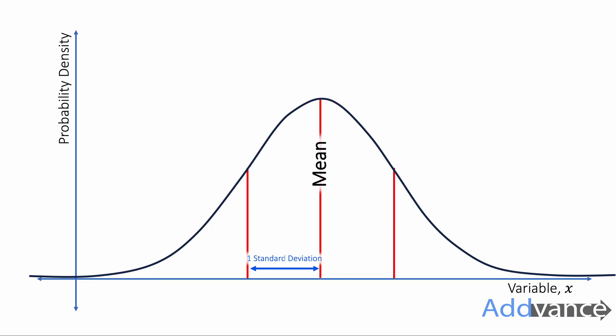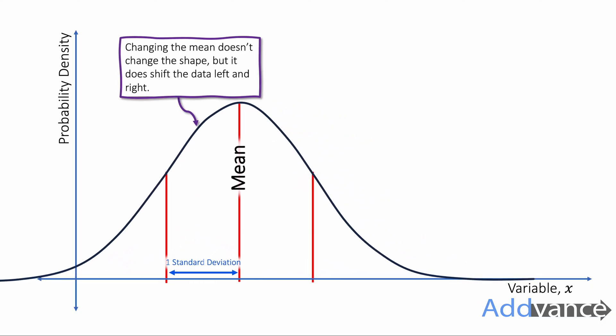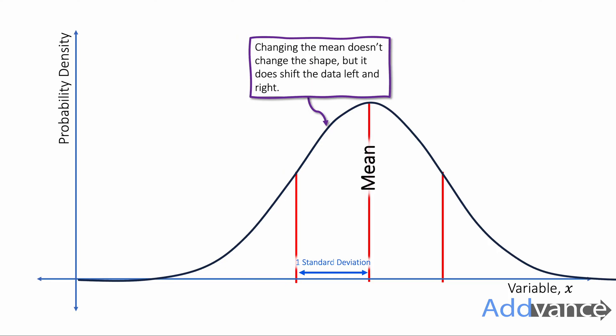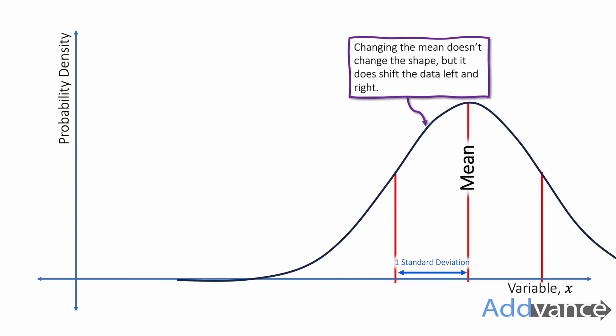Now we've got the mean and the mean affects where the curve sits. We've got a smaller mean it moves it to the left. We've got a bigger mean it moves it to the right. So we can affect the shape of the curve just by manipulating the mean or changing the standard deviation. The standard deviation spreads it out, but the mean moves it to the left or right.